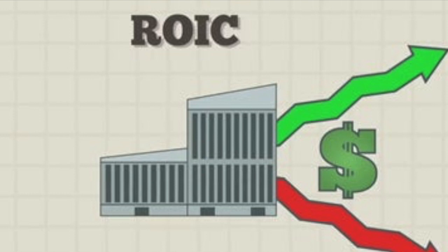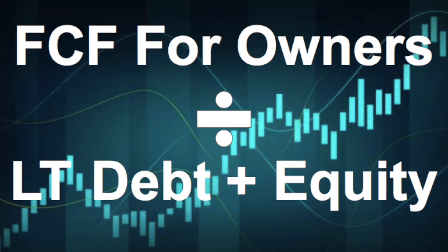There are many ways to go about calculating this metric. The way I usually go about calculating ROIC is by taking free cash flow for owners and dividing it by long term debt plus equity. This usually gives investors a good picture of the profits a business is producing and the amount of capital they had to reinvest to achieve those profits.